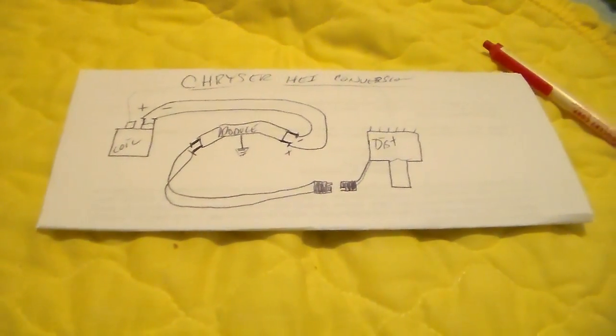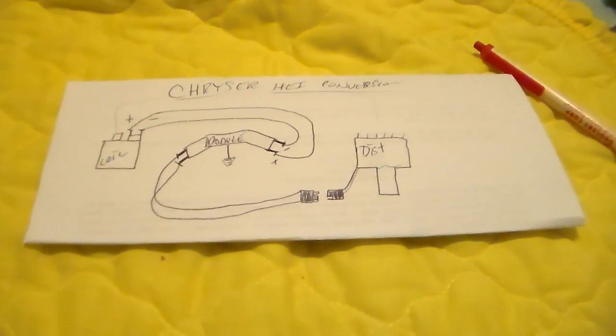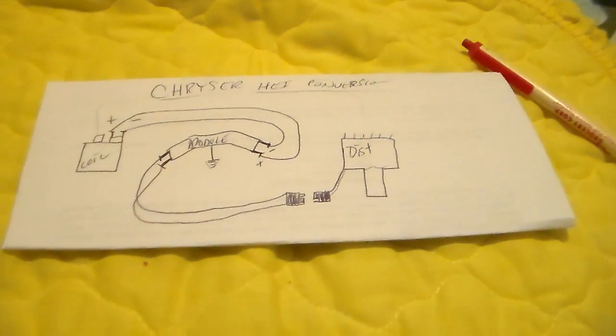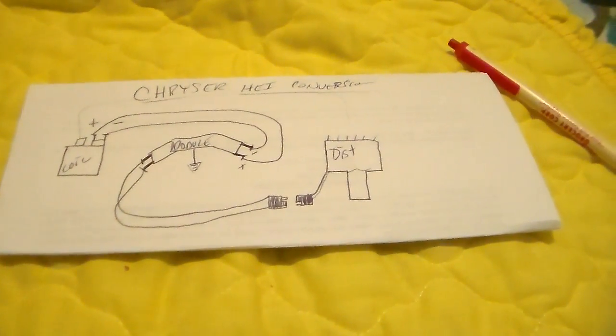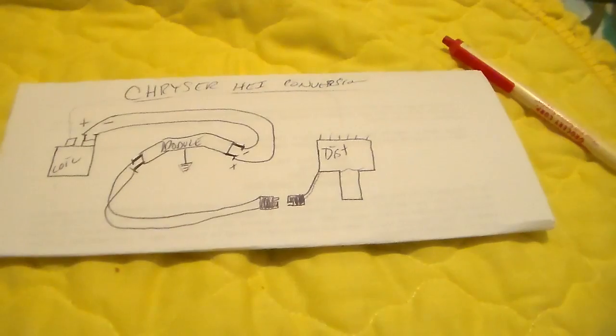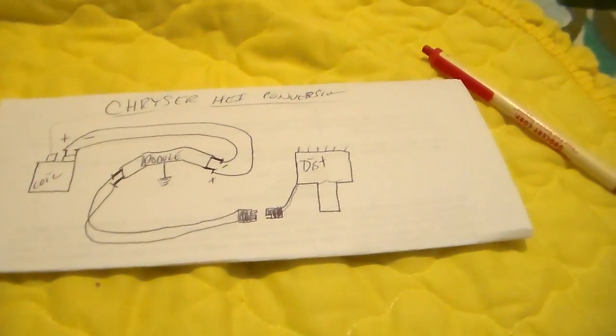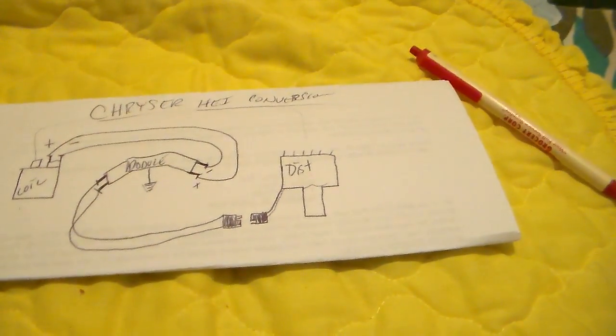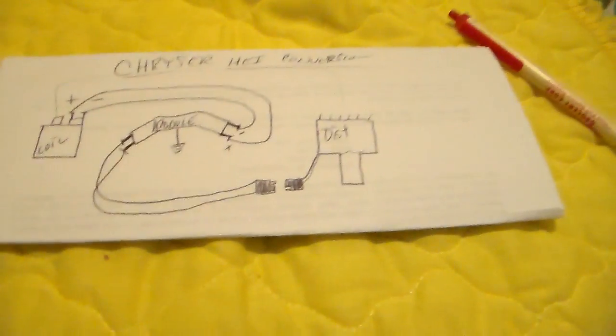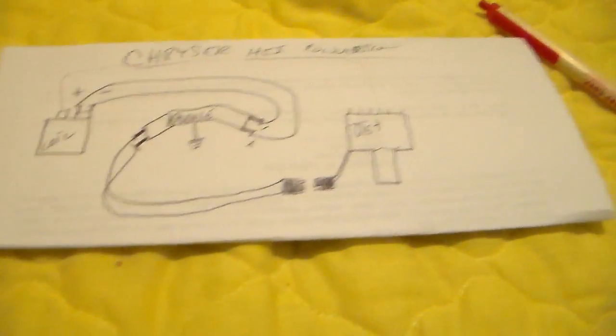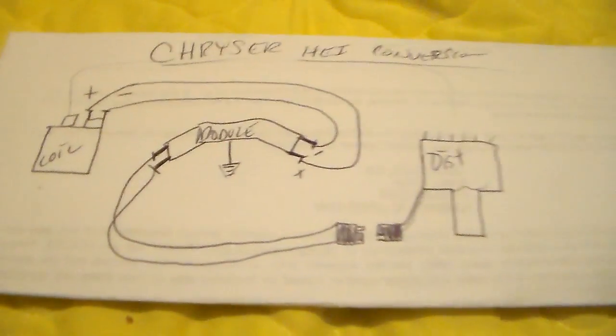Hey guys, how's everybody doing? I had a request from someone to make a diagram showing how to do the wiring on this HEI conversion that I did on that truck a month or two ago. I was glad to do that. It's pretty simple, so we'll take a look at this and go through it. I understand that sometimes it's easier for someone to see something on paper and figure it out that way.